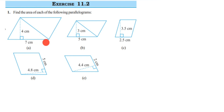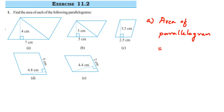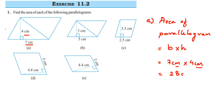Let's solve the first one. Area of parallelogram equals base into height. For problem A, base is 7 centimeters and height is 4 centimeters, so 7 × 4 = 28. Since centimeter × centimeter = centimeter square, the area is 28 centimeter square.